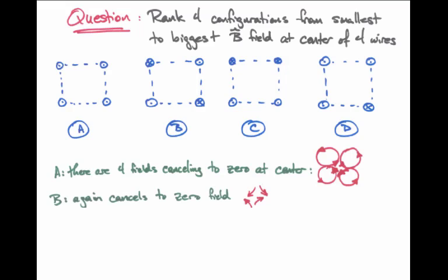Likewise, case B also has a magnetic field at the center which is zero, because the upper right and lower left wires have magnetic fields that cancel, and the upper left and lower right wires have magnetic fields that cancel.